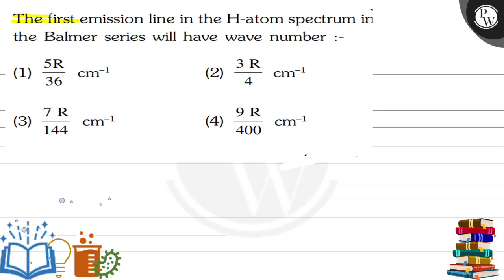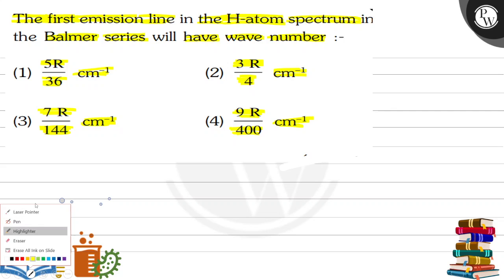The question asks: the first emission line in the hydrogen atom spectrum in the Balmer series will have wave number — with four options: option one, five R upon 36 cm inverse; option two, R upon 4 cm inverse; option three, seven R upon 144 cm inverse; option four, nine R upon 400 cm inverse. We have to find the first emission line in hydrogen spectrum wave number.